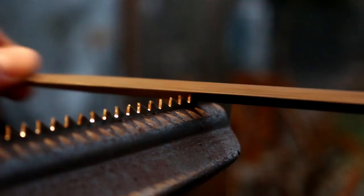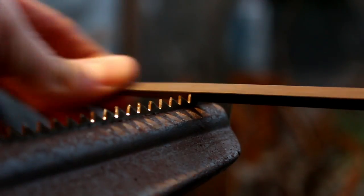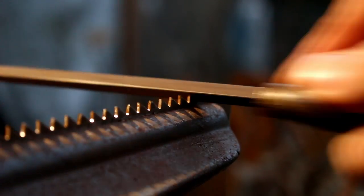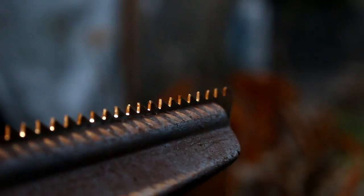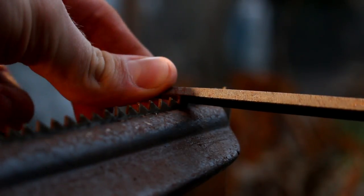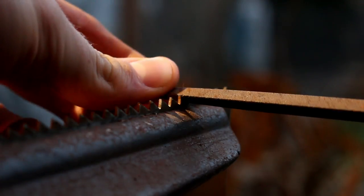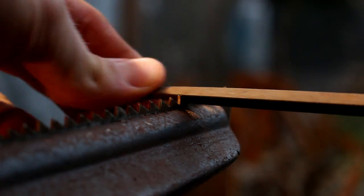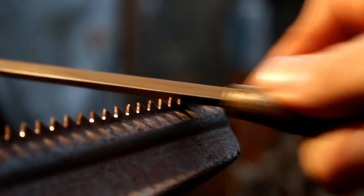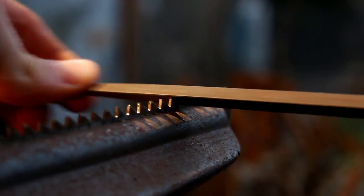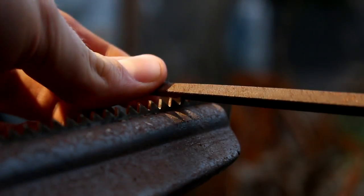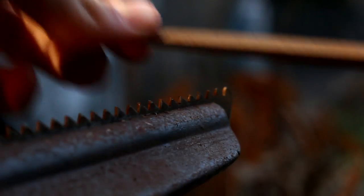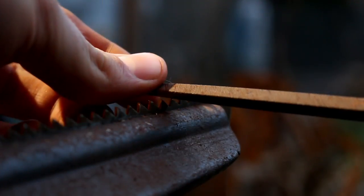As you're filing, make sure you count each stroke. So that would be one, two, three, four. Move on to the next one. One, two, three, four. And just keep doing whatever number you're doing. So for me, I'm doing four for each.